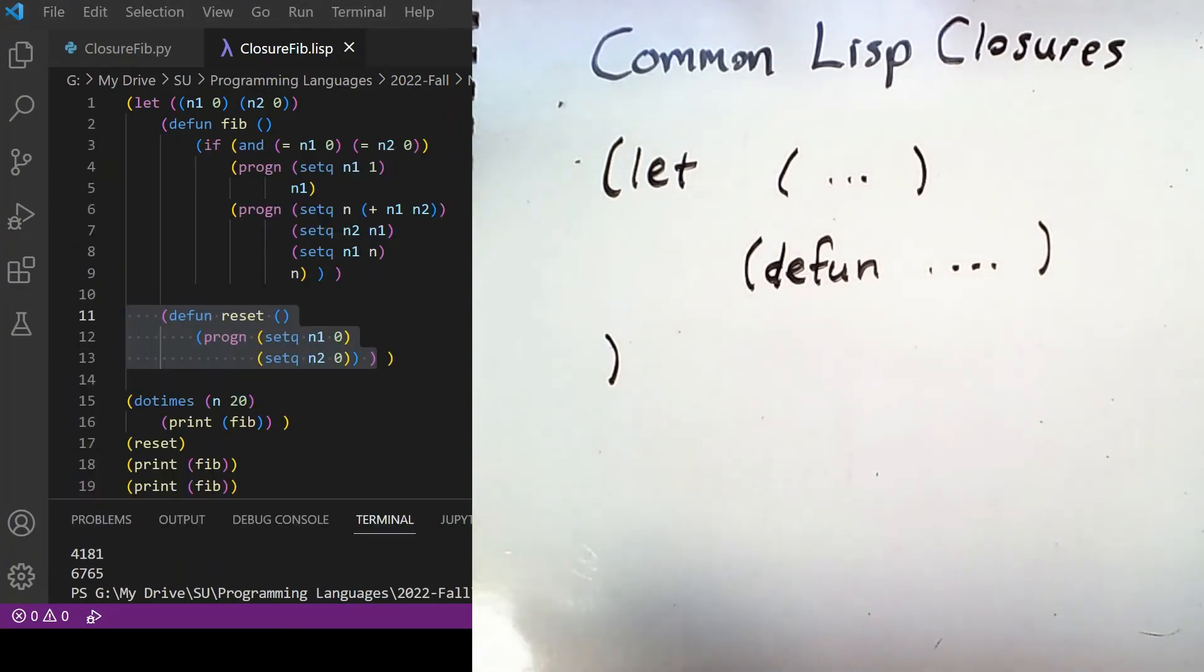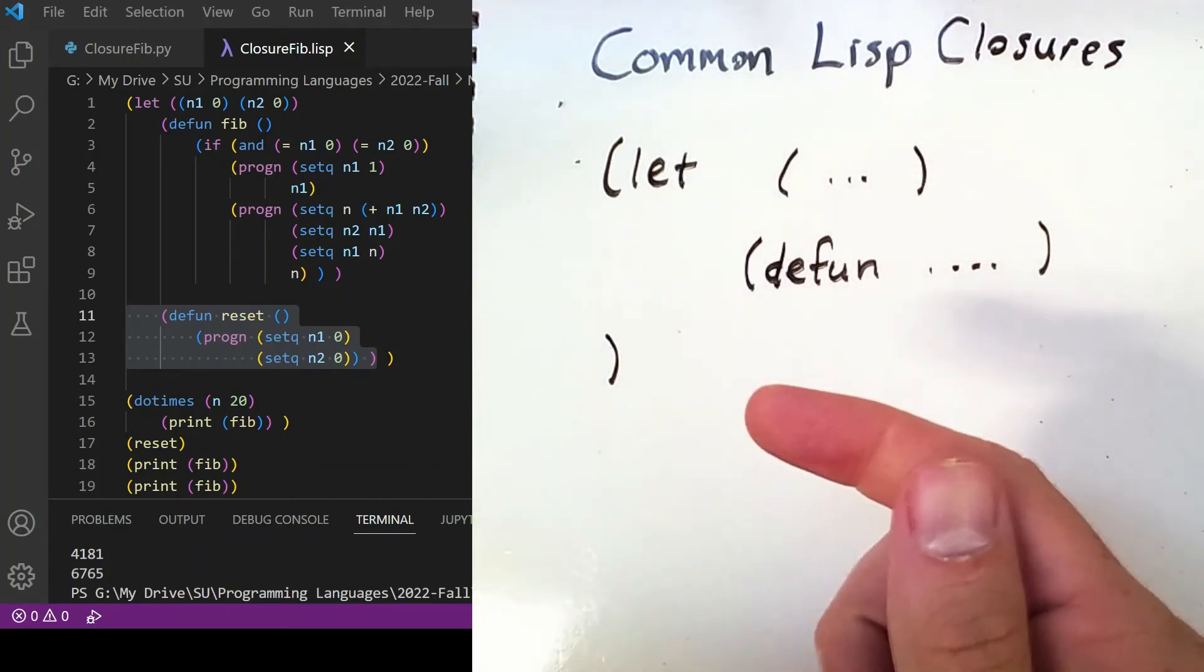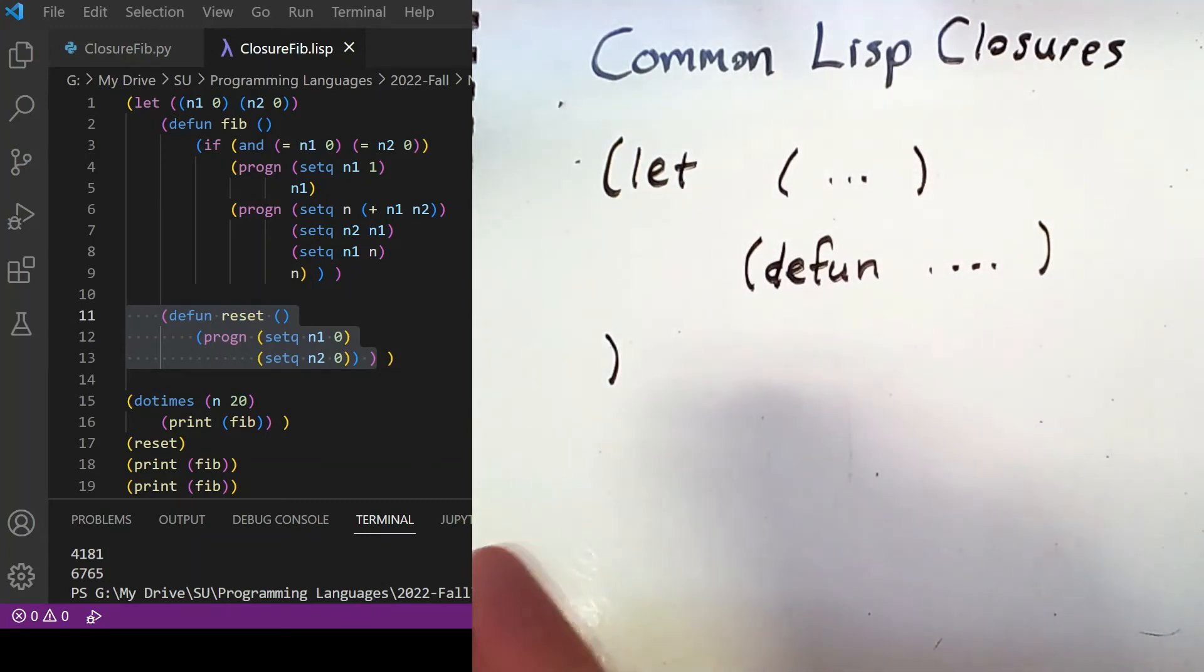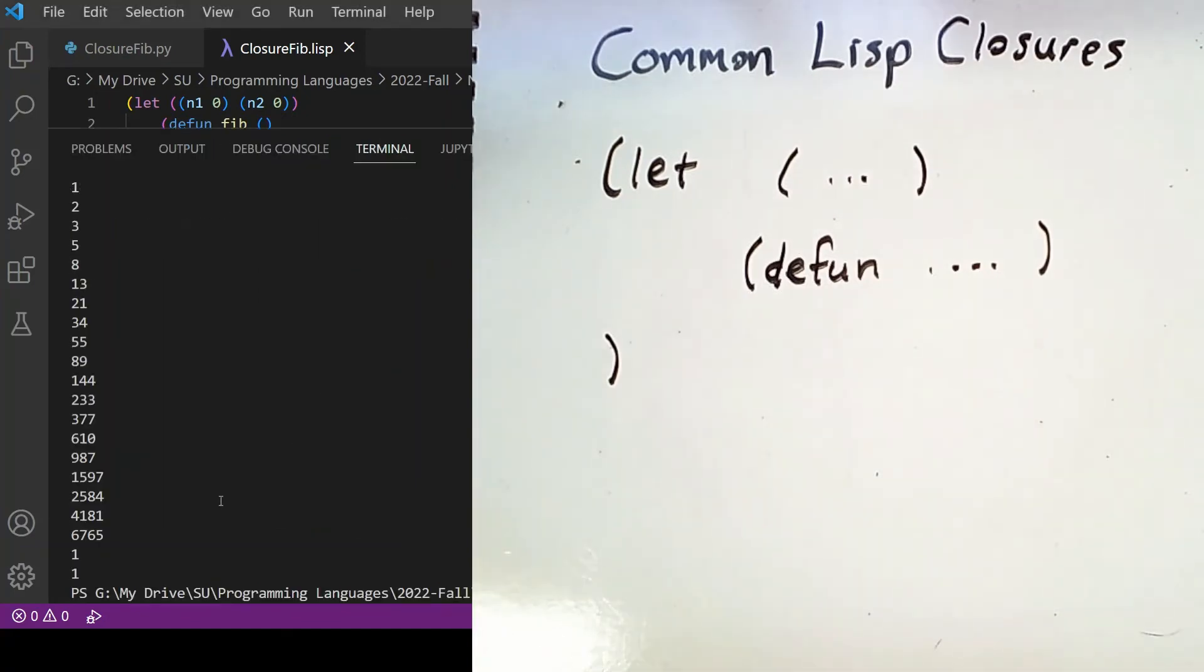And now I'm going to add an additional function inside my closure named reset that resets the values of the variables n1 and n2. So if I call reset at the bottom of this code and then print out calls to fib again, it has now reset the sequence. Notice that after printing out several Fibonacci numbers, we then get one, one because we've reset the sequence.